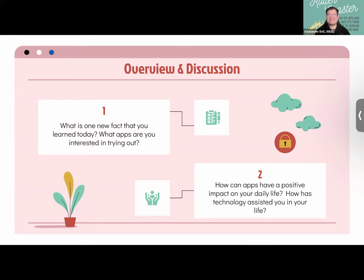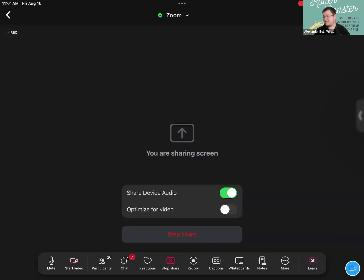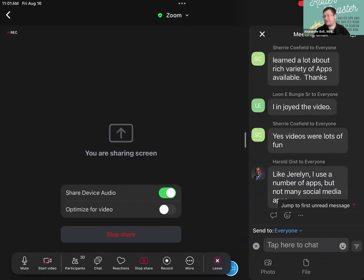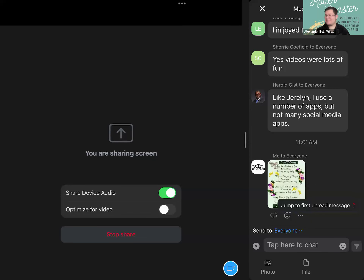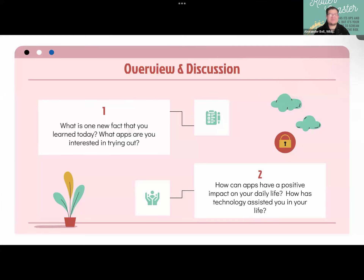Mr. Leon asks about adding a photo to the Zoom chat. Answer: next to 'Tap here to chat,' tap the plus sign; if you haven't done so, allow access to all photos; then tap Photo and you can add any photo from your Photos app into the Zoom chat.